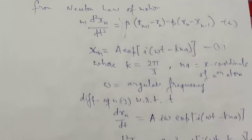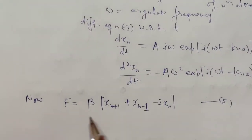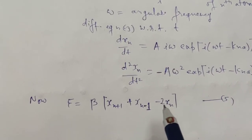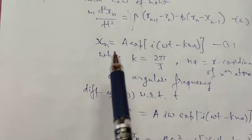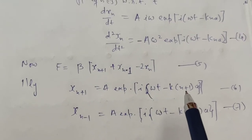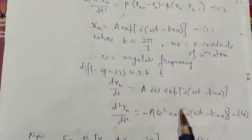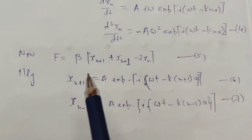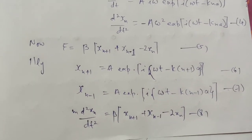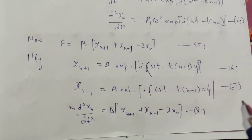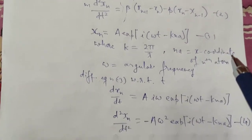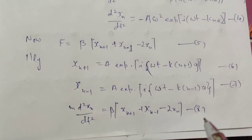Rearranging the first equation, we get: beta * (x_{n+1} + x_{n-1} - 2*x_n). Similarly, we can calculate x_{n+1} and x_{n-1} by substituting n+1 and n-1 into the trial solution. Using equations 3, 6, 7, and 8 together with equation 4, we substitute into the equation of motion to obtain the dispersion relation.